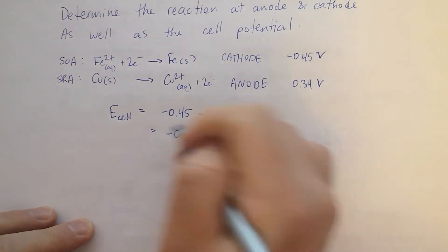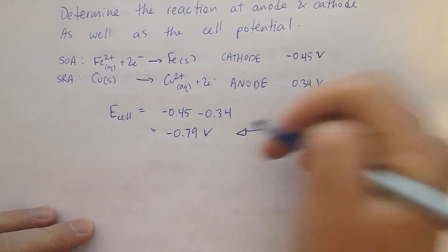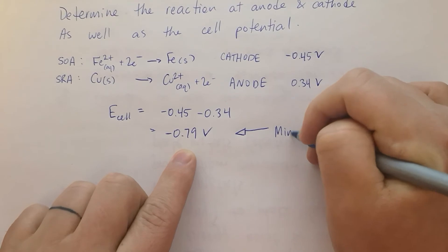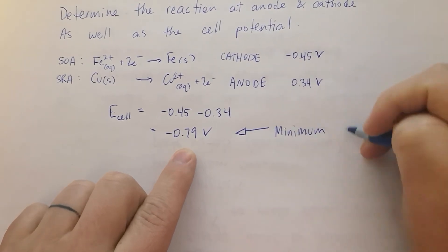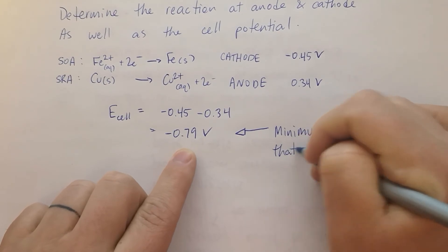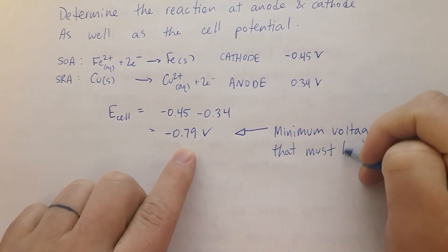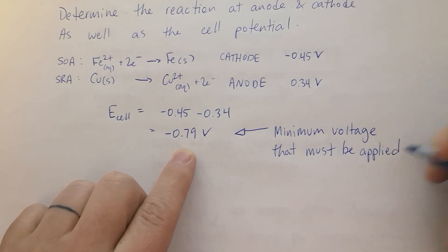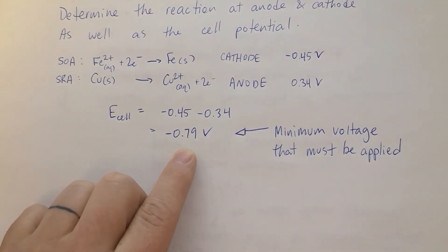The big thing I want to talk about is that this tells you the minimum voltage that must be applied to the cell, basically across the electrodes to make electrons move from anode to cathode.